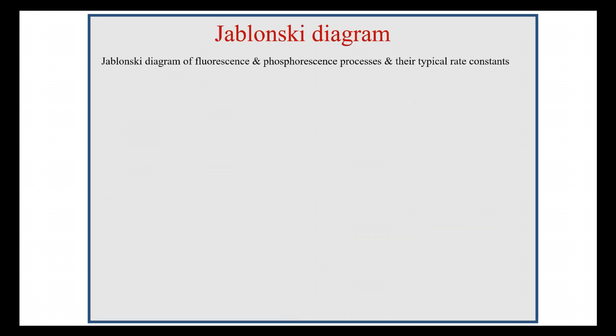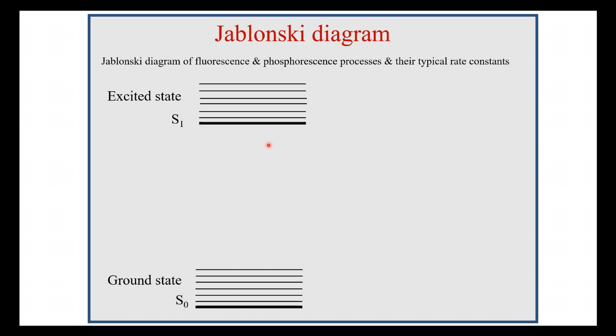Coming to the Jablonski diagram. In this diagram, you can see different energy levels: ground state and excited state. In the ground state, the molecular energies of electrons are constant and possess minimum value. When incident light falls on this material, it absorbs energy and a transition occurs to high energy levels—that is, the first or second electronic state. This transition depends on the molecule and the incident light. This process is known as absorption.